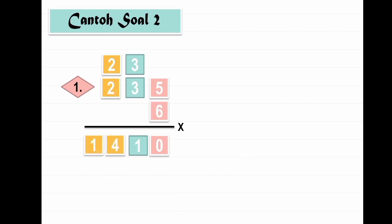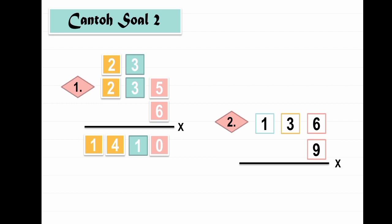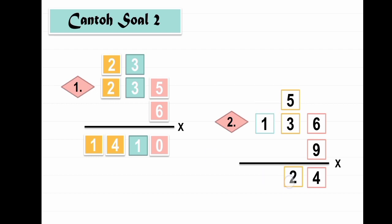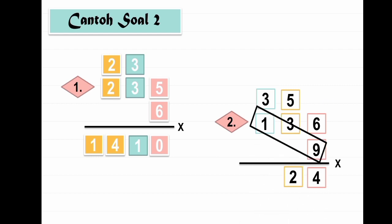Nomor 3: 136 dikali 9. 9 dikali 6 hasilnya 54. Ditaruh angka 4, disimpan angka 5. 9 dikali 3, jangan lupa ditambah 5, hasilnya 32. Ditaruh angka 2, disimpan angka 3. 9 dikali 1 ditambah 3, hasilnya 12. Jadi 136 dikali 9 sama dengan 1224.